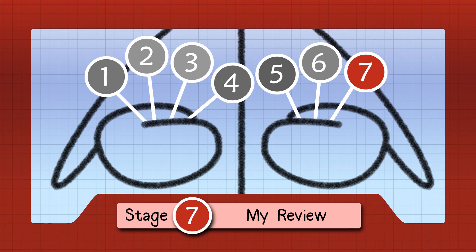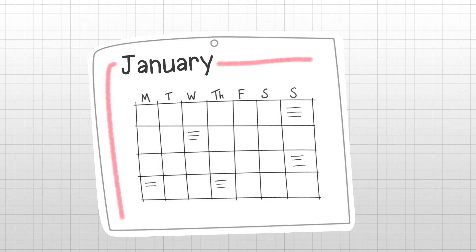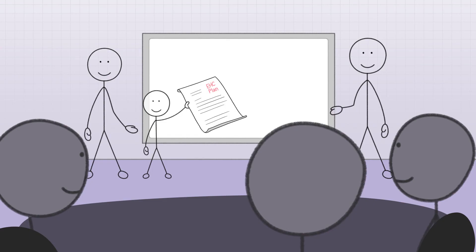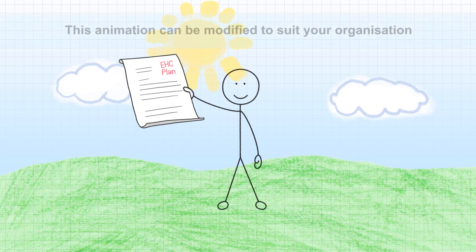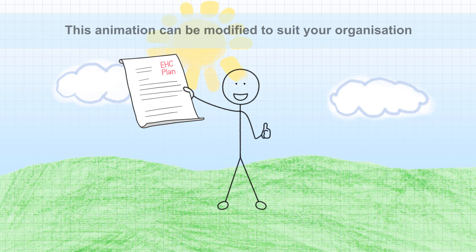Stage seven, my review. At least once a year, the family and professionals will be asked to review the EHC plan. A regular review keeps the young person's plan up-to-date and relevant.